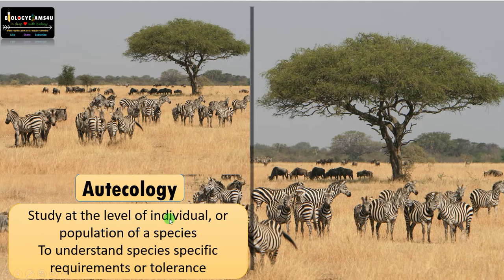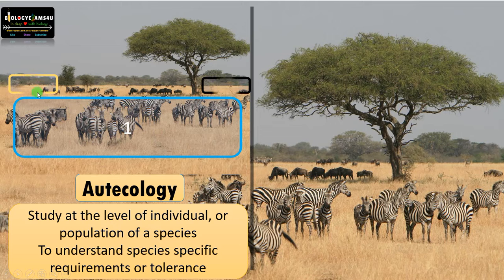Otocology is the study at the level of an individual or population of a species — for example, one zebra population, a second population, a third population, all being zebra populations, meaning populations of a single species. The purpose is to understand species-specific requirements or tolerance levels to different environmental conditions or seasons, and to understand the structure and distribution of that particular species, in our example, the zebra population.